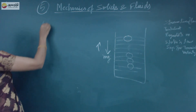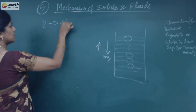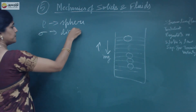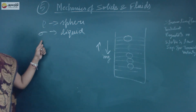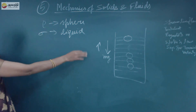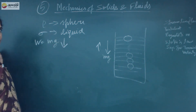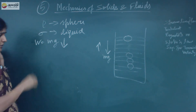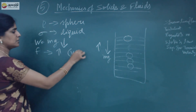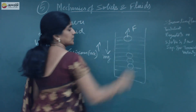Let ρ be the density of the sphere and σ be the density of the liquid. The weight of the sphere — due to its density — is acting vertically downward. What is the upward force? The viscous force is acting in the upward direction, and weight W is acting in the downward direction.